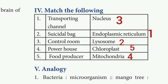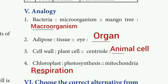Fifth match: food producer — answer is chloroplast. Analogy. First: bacteria is to microorganism as mango tree is to macroorganism. Second: adipose is to tissue as eye is to organ. Third: cell wall is to plant cell as centriole is to animal cell. Fourth: chloroplast is to photosynthesis as mitochondria is to respiration.